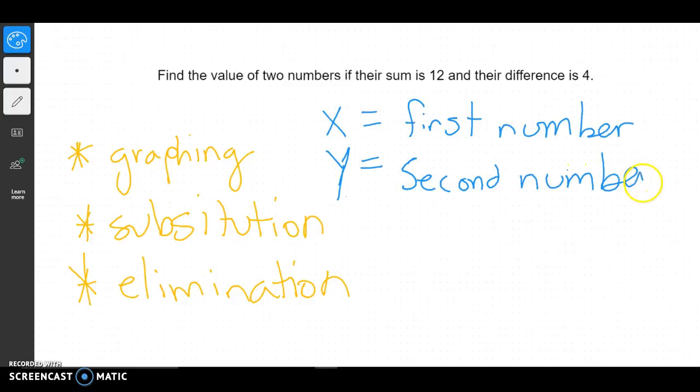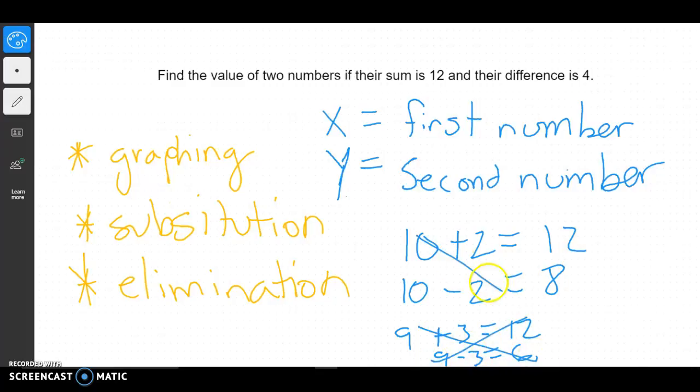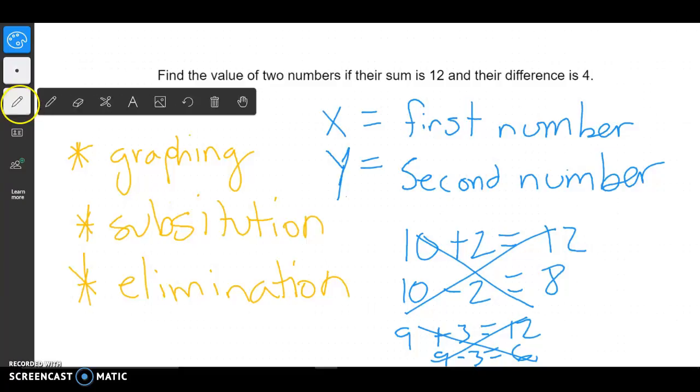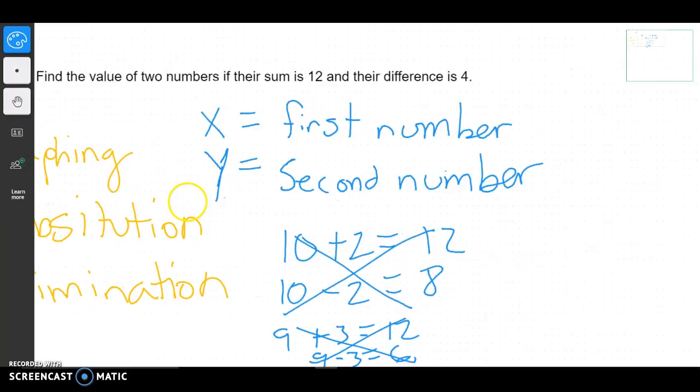Now what we could do is try to find different combos that would work. Like maybe I'd start with 10 and 2, because 10 plus 2 equals 12, but 10 minus 2 only equals 8. I could try other numbers like maybe 9 and 3. Well, 9 plus 3 equals 12, but 9 minus 3 equals 6. So we could see how this could take a while, because I would have to try every number that added up to 12, and there's a lot of them.